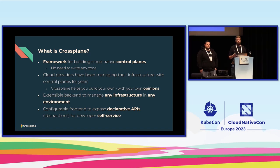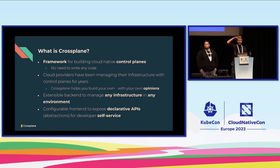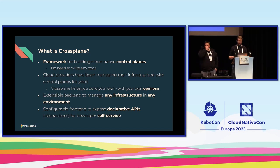Think about the top and the bottom of the Crossplane Project. On the bottom, you can manage any type of infrastructure — it's very extensible, so you can talk to any cloud providers or on-premises systems. On the front end, you can bring together those resources and declare your own platform APIs, your own infrastructure APIs. So it's highly extensible on both the front and the bottom.